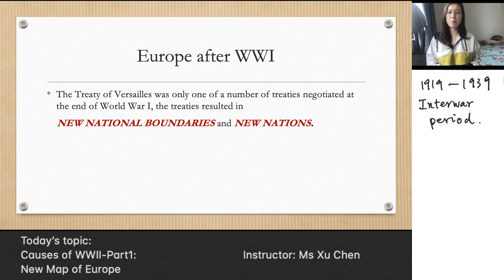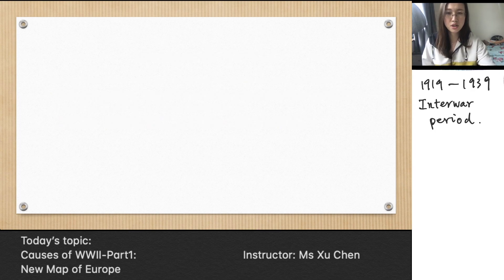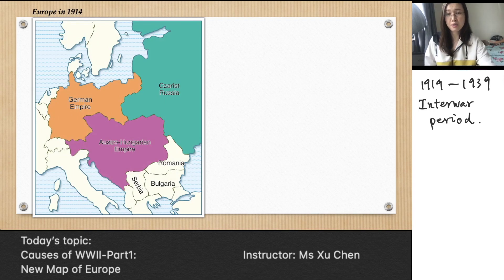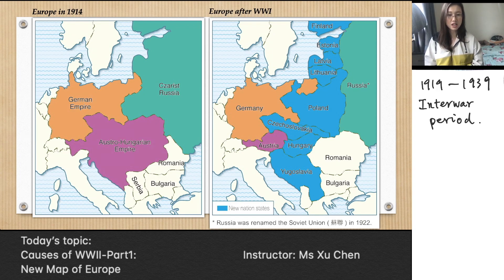All these treaties resulted in new national boundaries and new nations. So at this stage it's important for us to check the European map. We're going to make a comparison — this is Europe in 1914, and this one is Europe after the First World War. One big change is all the countries shown in blue — they were all new nation-states.